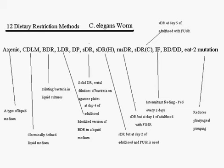The 12 methods are: AXINIC, CDLM, BDR, LDR, DP, SDR, SDRH, MSDR, SDRC, IF, BD, and DD, along with the ET mutation.